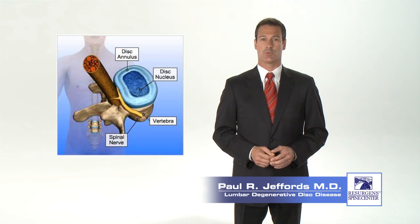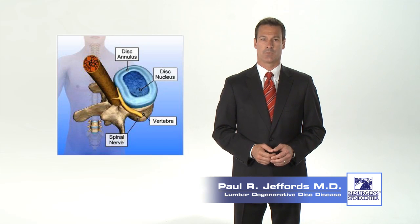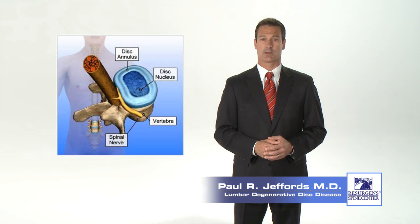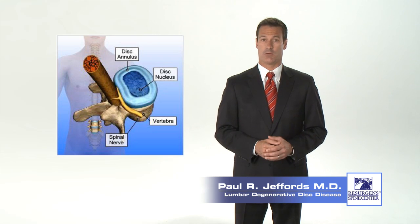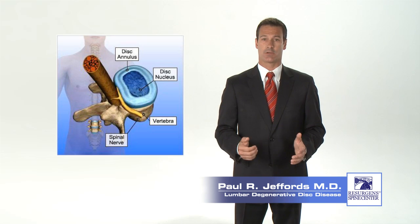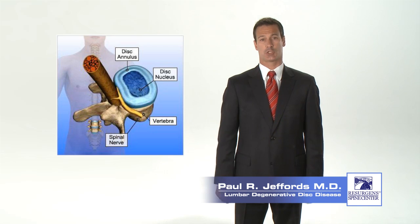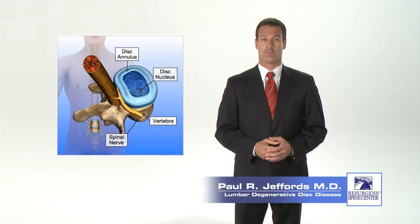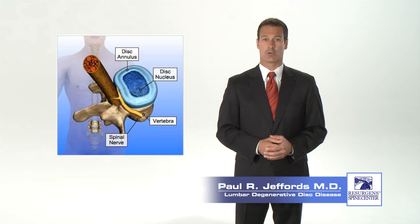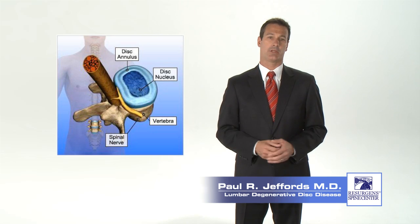To understand disc degeneration, we need to take a closer look at the structure of the disc. Each spinal disc consists of two parts: a firm outer wall called the annulus, which is like a tough ligament made of fibers woven together, and a softer inner portion called the nucleus, which is like a firm gel. The nucleus is made of proteins and other materials that naturally hold water, which keeps the nucleus well hydrated and allows it to function as a good shock absorber. The outer one-third of the annulus is innervated by a fine network of very small nerves.